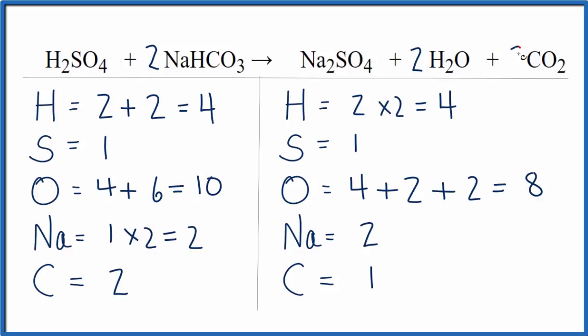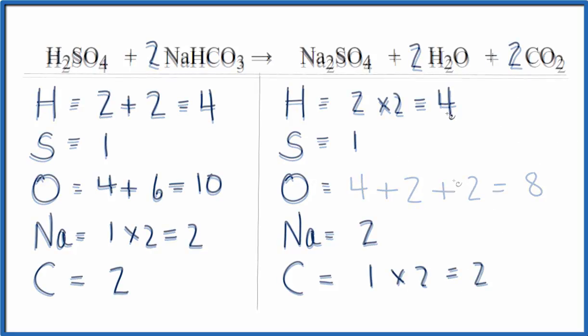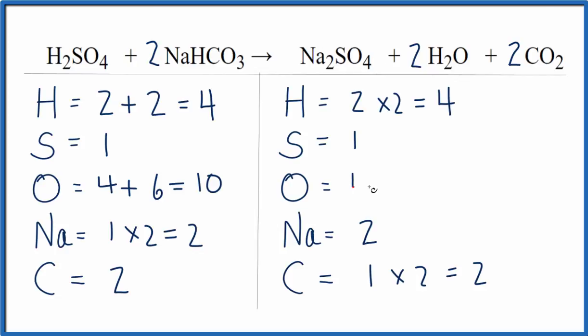And I could put a two in front of the carbon dioxide, and we can fix the carbon right away. So one times two, that equals two. And then we need to update our oxygens again. So for our oxygens, we have our four, plus we have our one times our two, that's two, plus two times two, that's four.